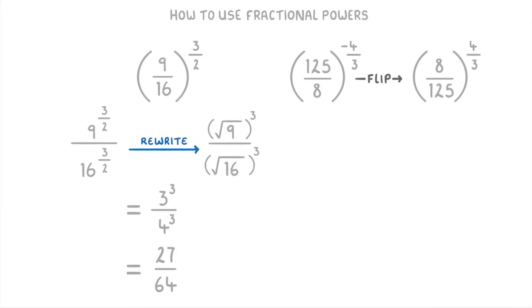Next, we need to take our power and apply it to the numerator and denominator separately. So we have 8 to the power of 4 over 3 divided by 125 to the power of 4 over 3.